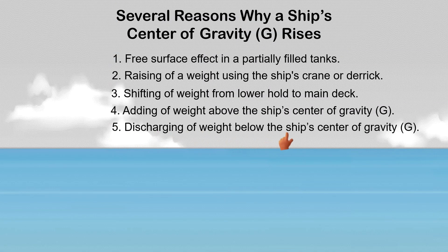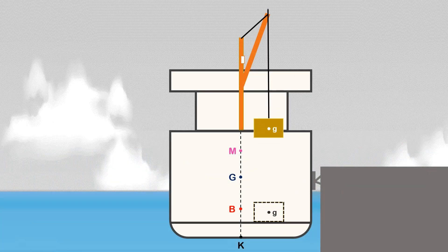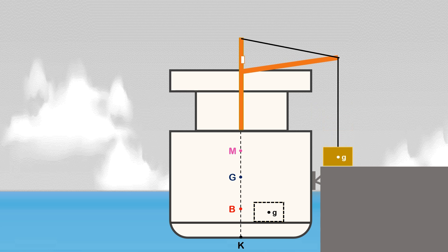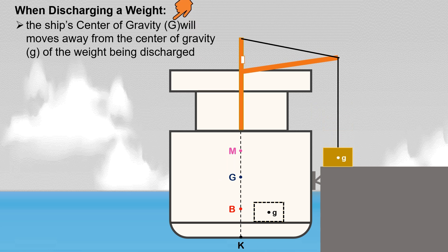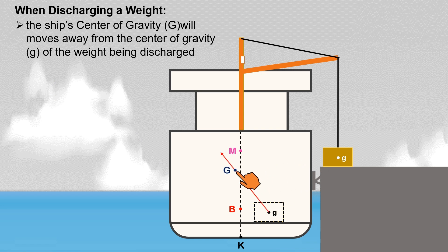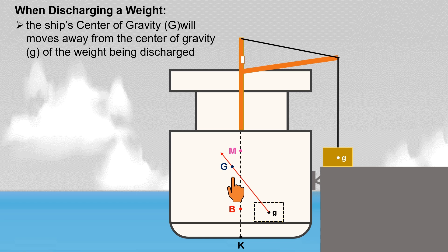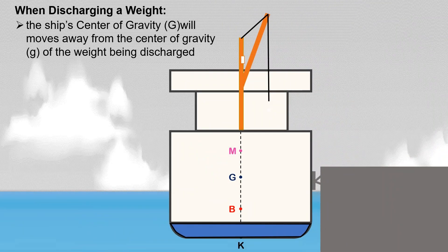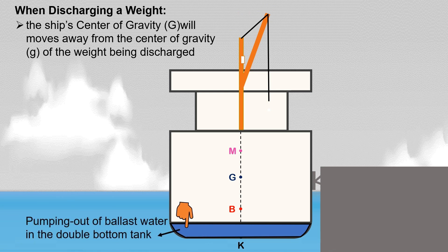Next, discharging of weight below the ship's center of gravity — any weight discharged below ship's G will cause a rise in the ship's center of gravity. When discharging a weight, the ship's center of gravity moves away from the center of gravity of the weight being discharged. Once the weight is discharged, the ship's center of gravity moves away from the weight's center of gravity. The ship may also list slightly because ship's G moves off the centerline. Another example of discharged weight below ship's center of gravity is the pumping out of ballast water in the double bottom tank, which will also cause ship's center of gravity to rise.